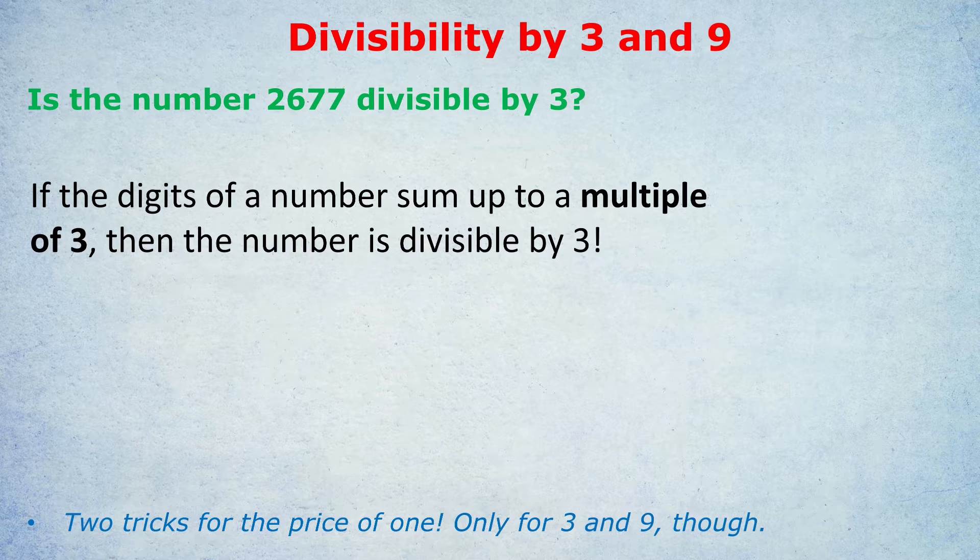Let's apply that to 2677. What is the sum of those digits? 2 plus 6 plus 7 plus 7. Doing some quick mental math, I believe that would be 22.